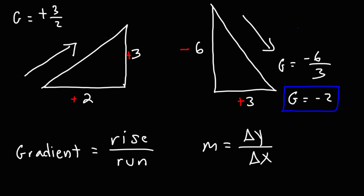Notice that this triangle is more steep. If we have a larger number — not taking into account the sign — the larger the gradient, the more steep the hill or triangle is going to be. The smaller the gradient, the less steep the slope is.